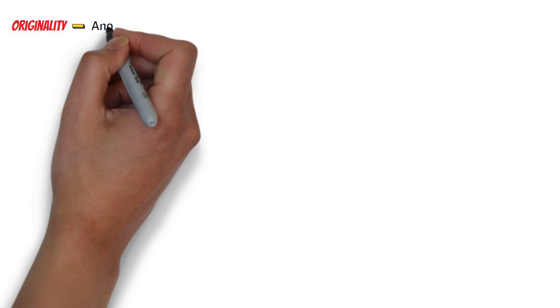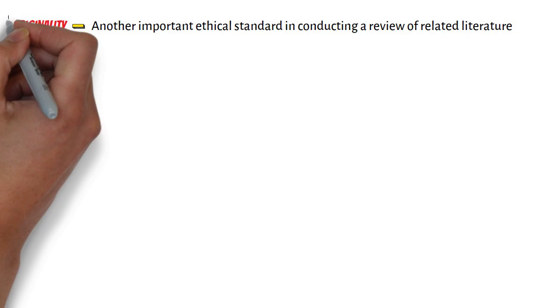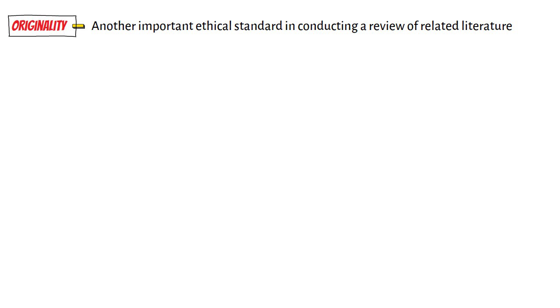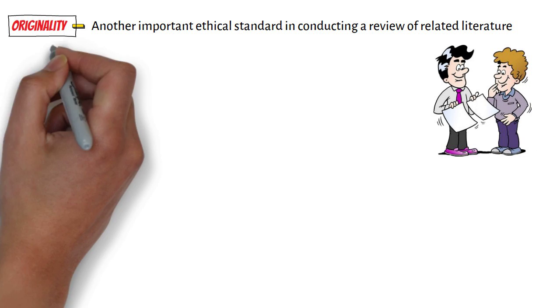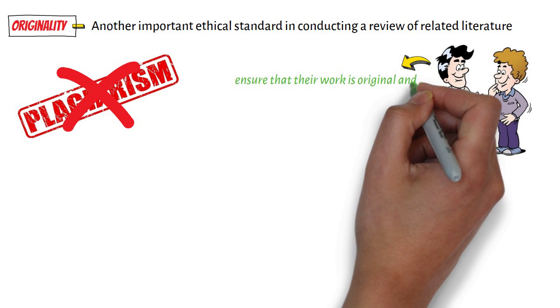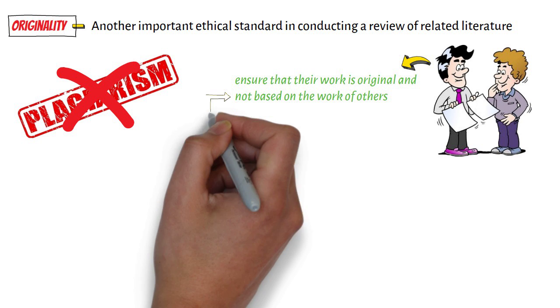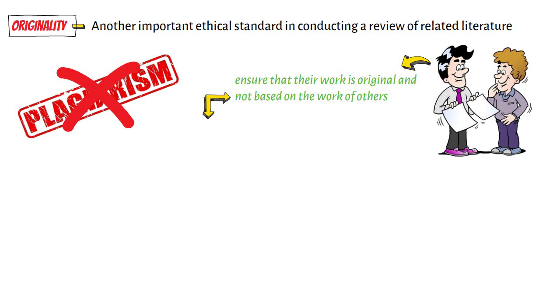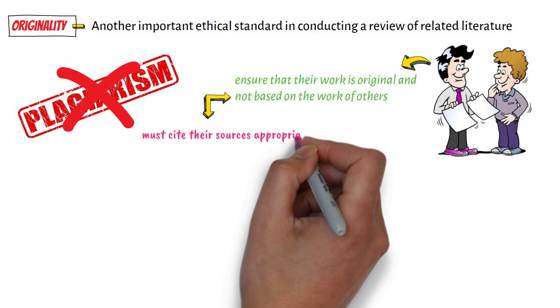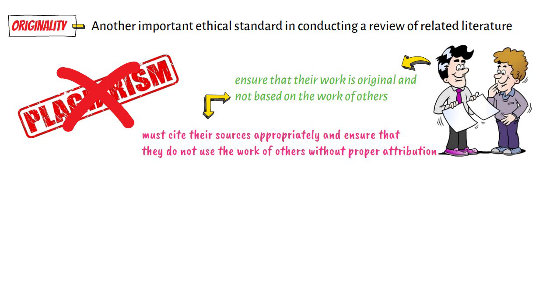Fourth, on originality. Another important ethical standard in conducting a review of related literature is originality. Researchers must avoid plagiarism and ensure that their work is original and not based on the work of others. This means that researchers must cite their sources appropriately and ensure that they do not use the work of others without proper attribution.